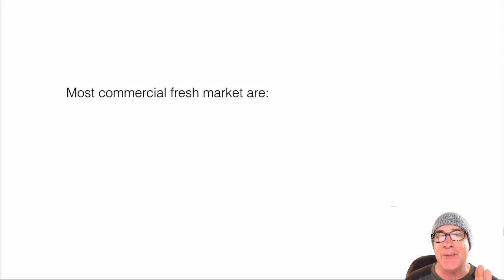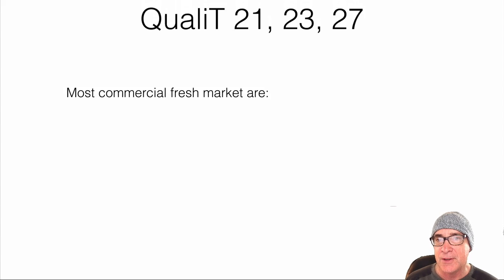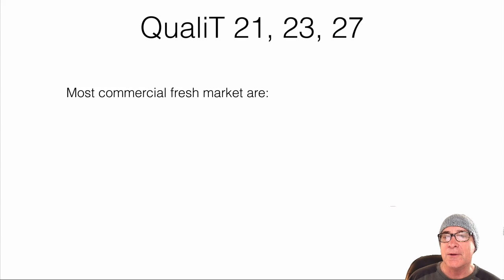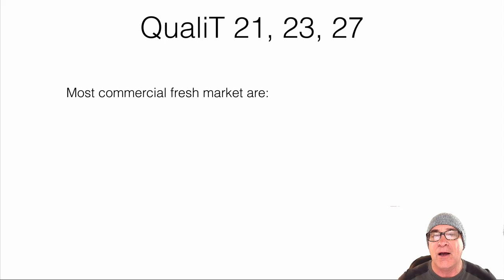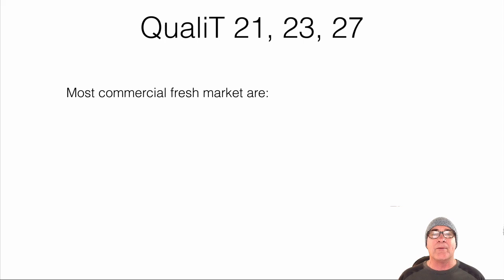During this next phase of the lesson I want to talk about a particular variety that owns about 90 percent of the market share in California when we talk about fresh market tomatoes. It's called the Quality 21, 23, or 27 — each of those numbers represents a specific variety that usually has to do with disease resistance or where it might be planted in certain parts of the west.